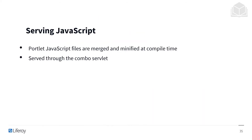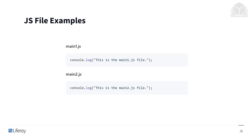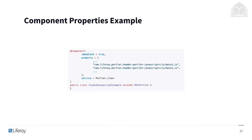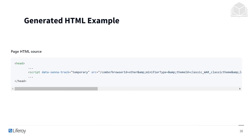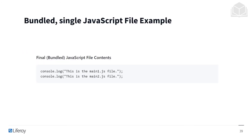When serving JavaScript, the portlet JavaScript files are merged and minified at compile time and served through the combo servlet. We have some file examples — main1.js and main2.js — which are referenced in the component properties as such, and lead to a generated HTML. Finally, the bundled single JavaScript file is as follows.